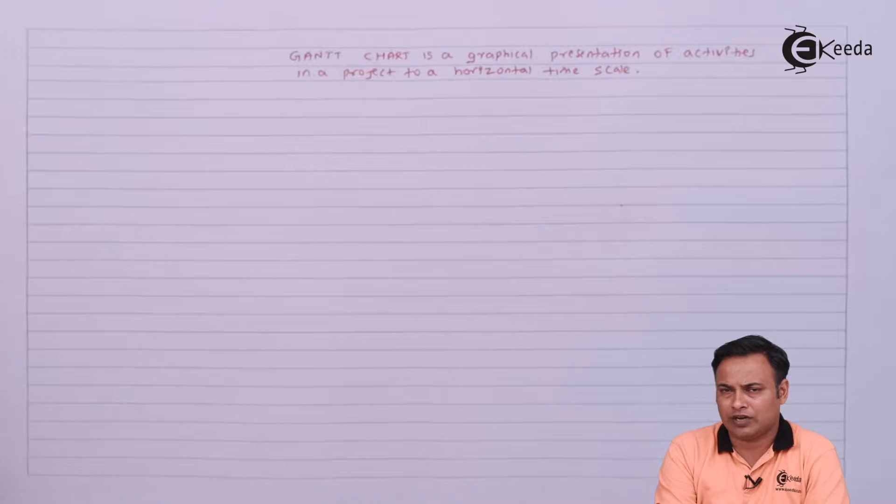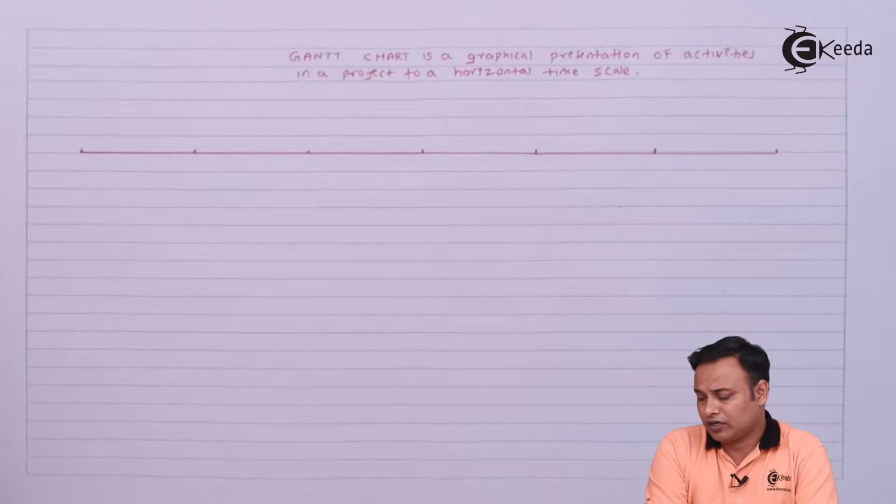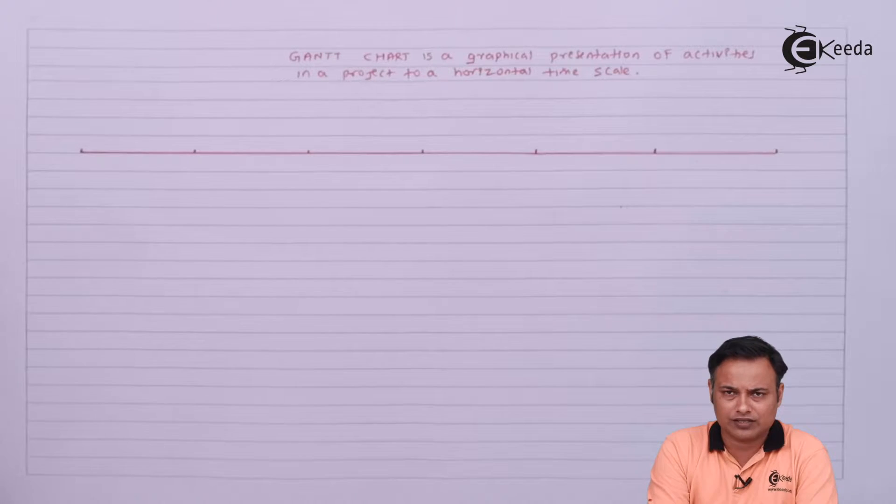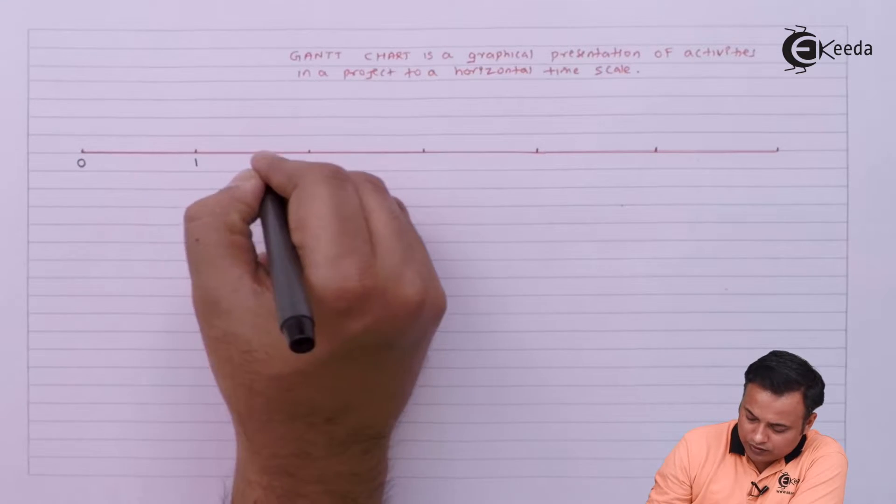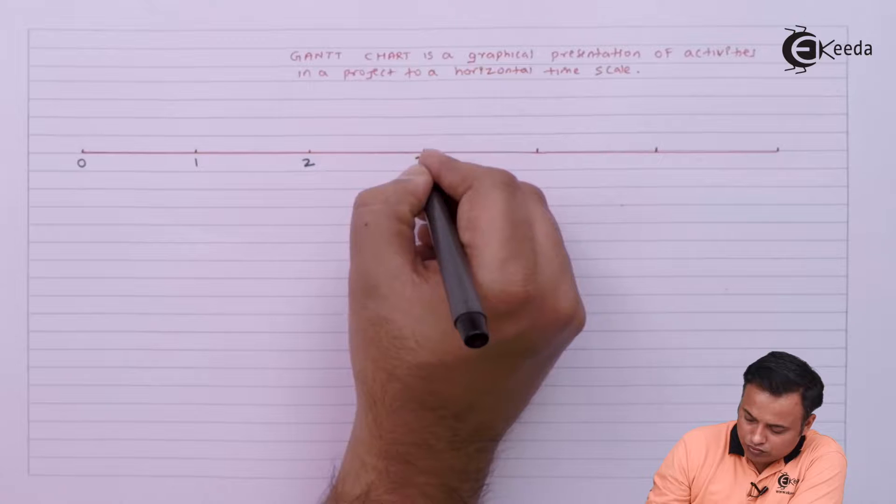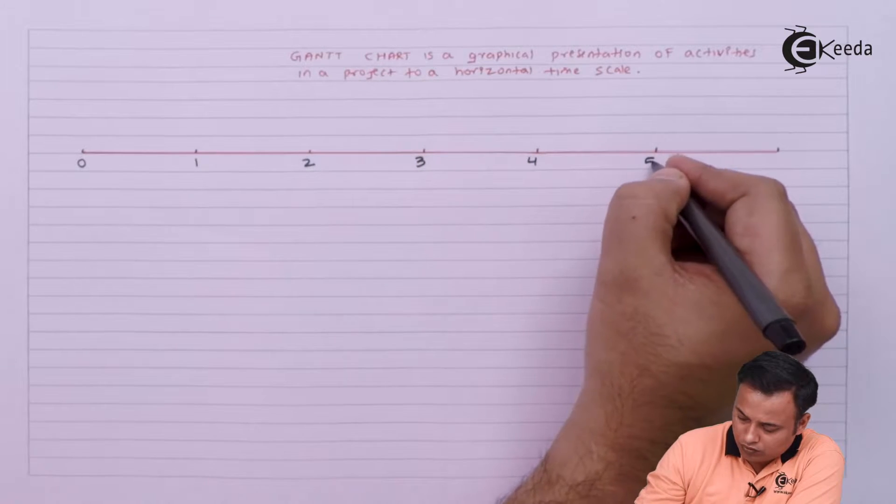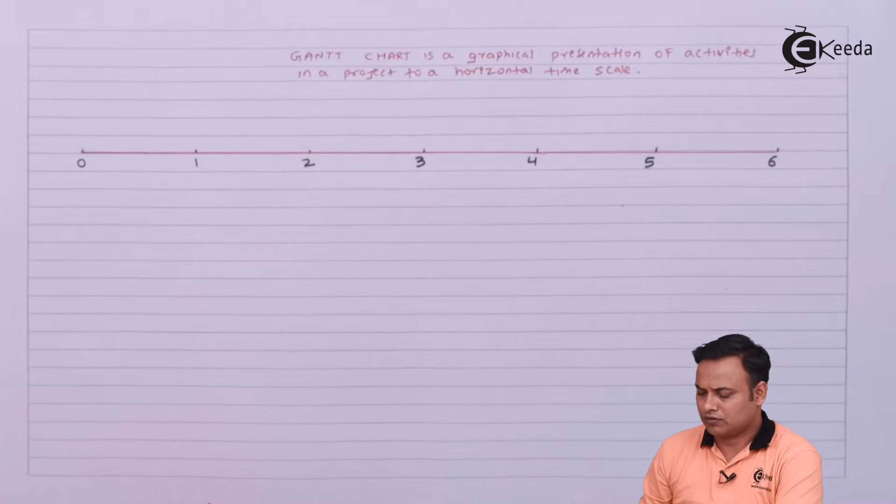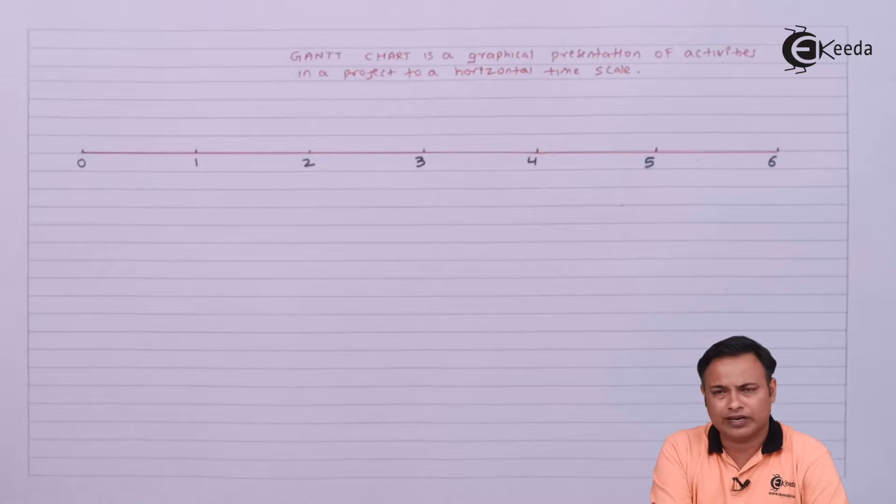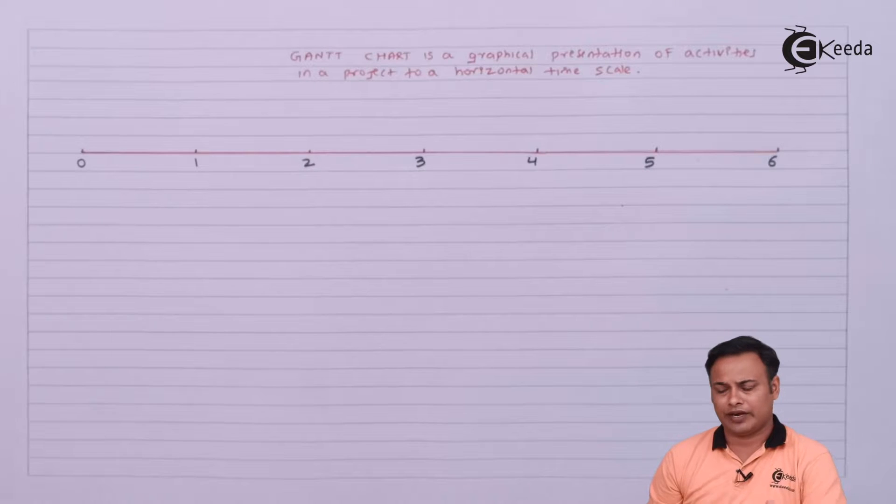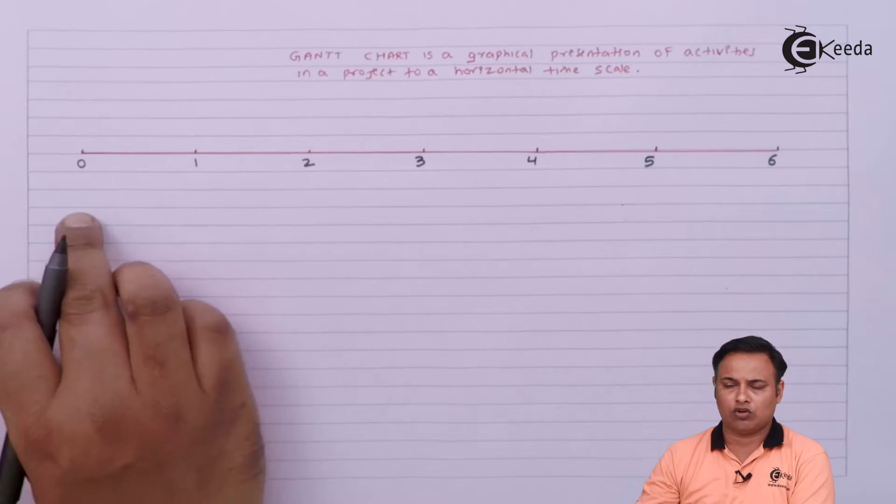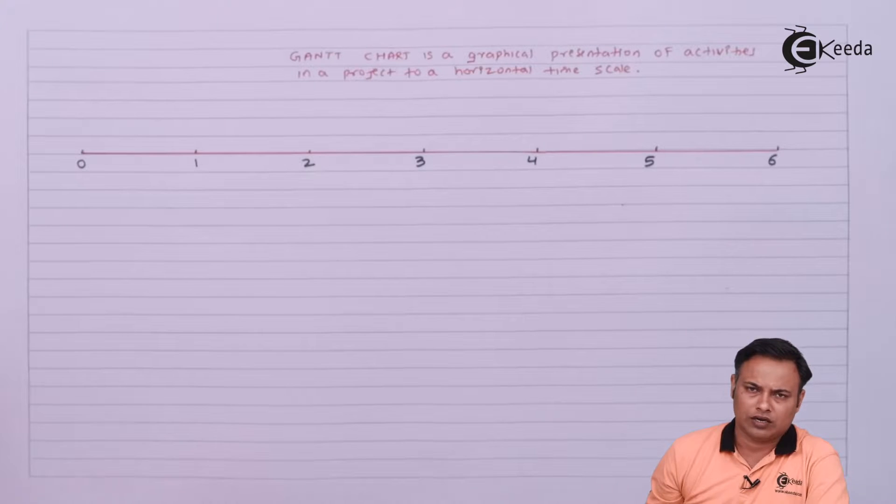Before solving the problem, let me explain how things will be shown on the Gantt chart. Imagine my project is for six days. We start at day zero and it gets completed on the sixth day. This is the timeline - zero, one, two, three, four, five, and six indicates the days or hours or time of the project.